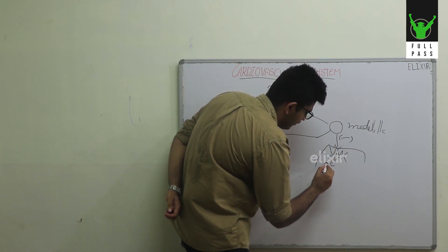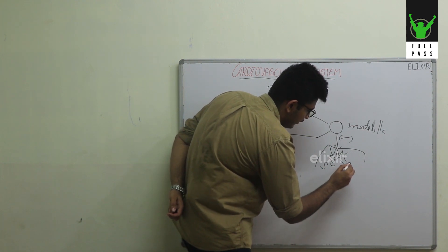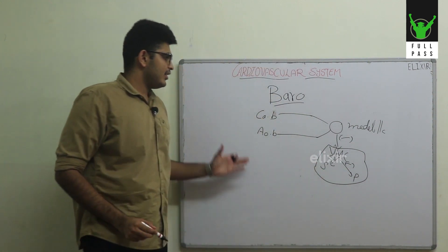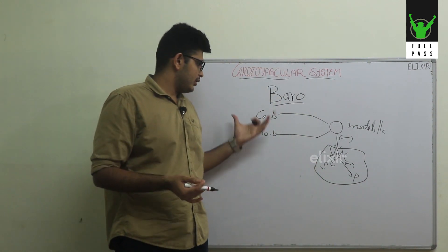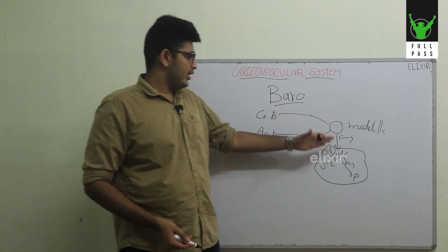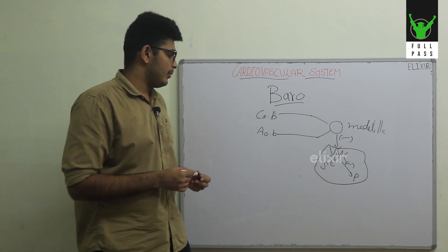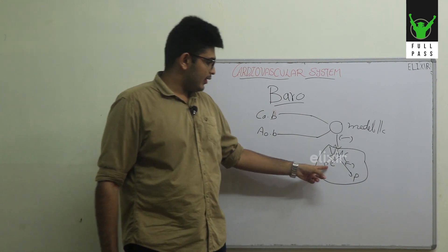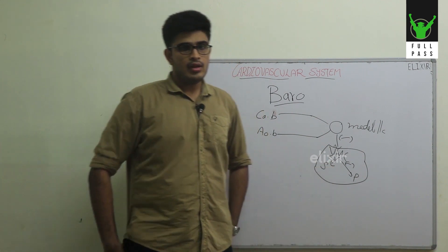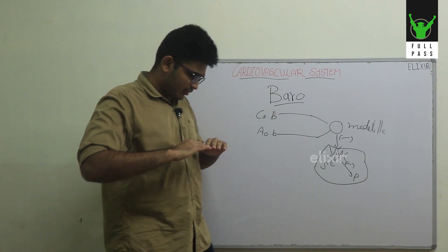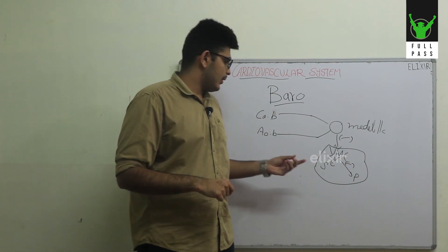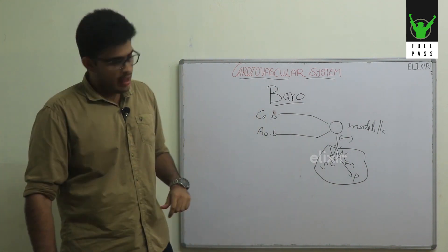The vasomotor center as a whole has a positive effect on the sympathetic system and a negative effect on the parasympathetic system. So when there is an increase in blood pressure, these receptors are activated, they reach the medullary center, which inhibits the vasomotor center, resulting in decreased activation of the sympathetic system and increased inhibition of the parasympathetic system.